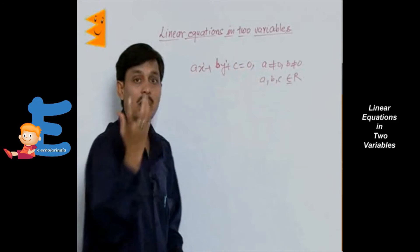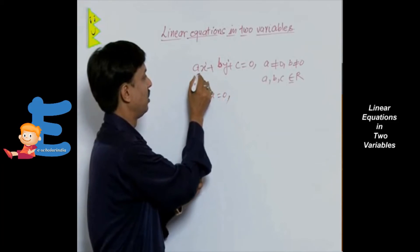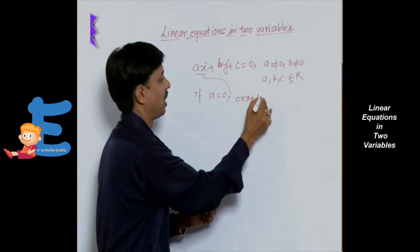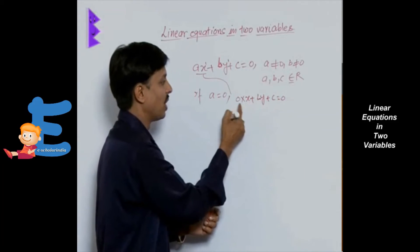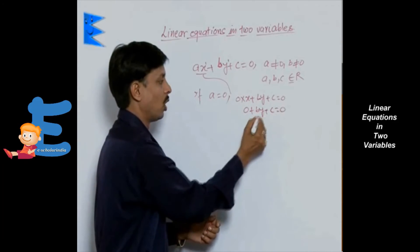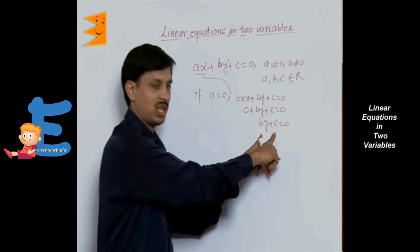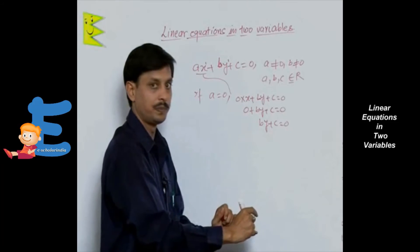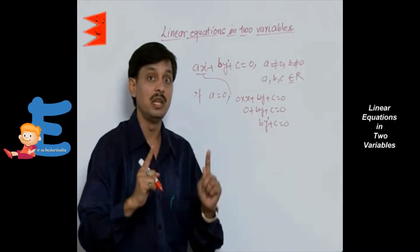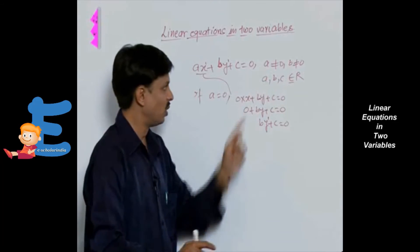If A is 0, then this term will be 0 times X plus BY plus C equals 0. Zero times X becomes 0, so we get BY plus C equals 0. This is indeed an equation — it is a linear equation because the variable has power one — but it is a linear equation in one variable, that is in Y. That is why A should not be equal to 0.